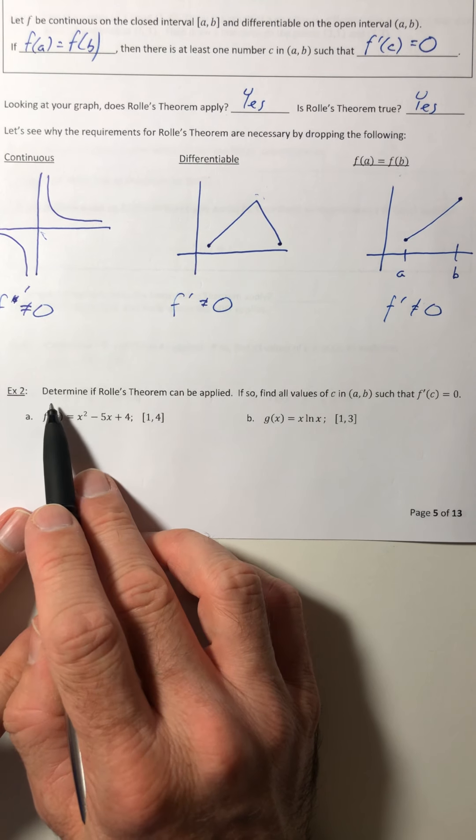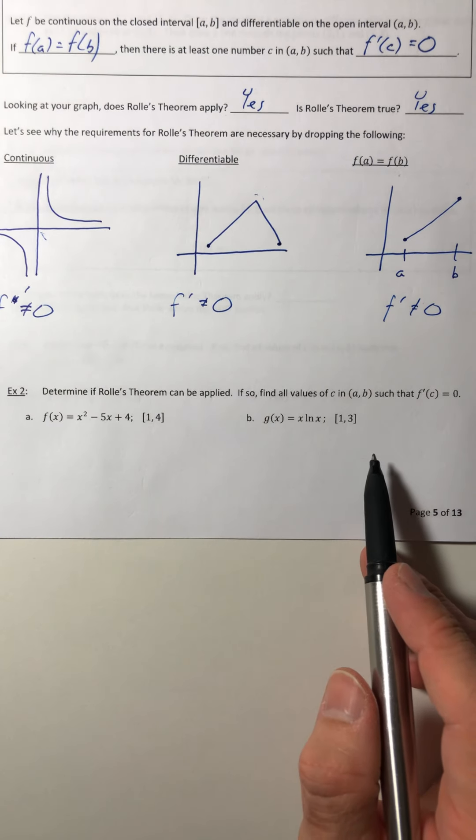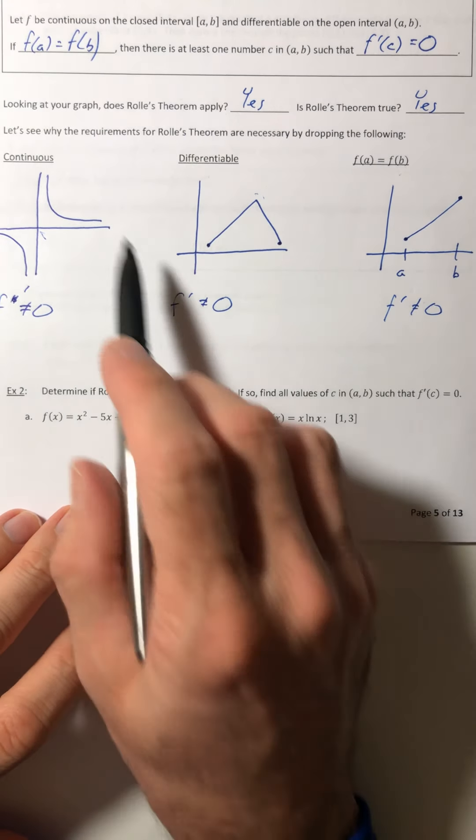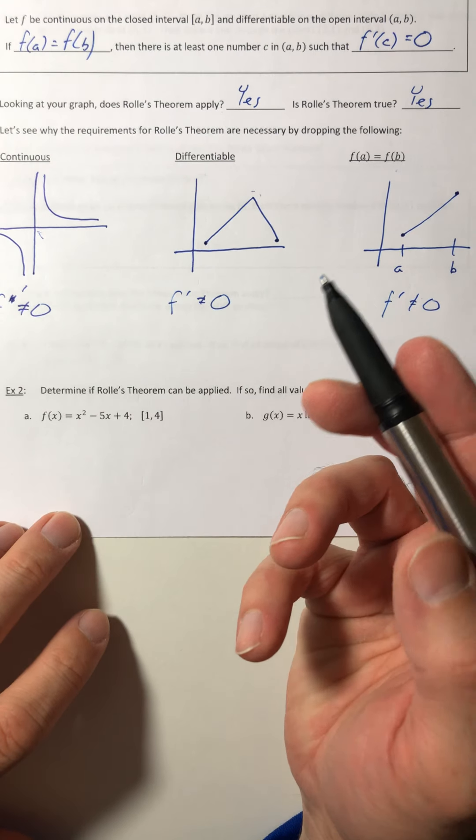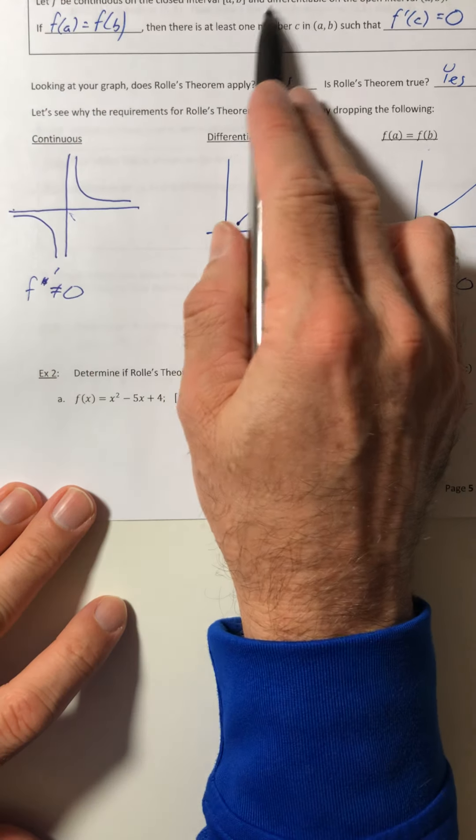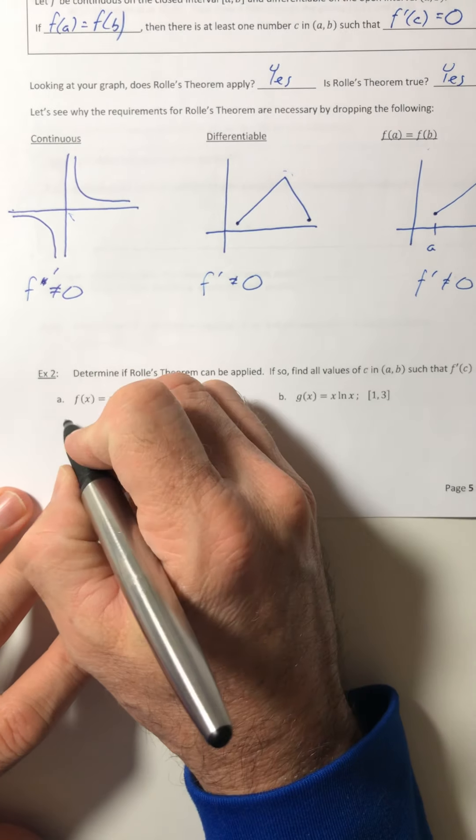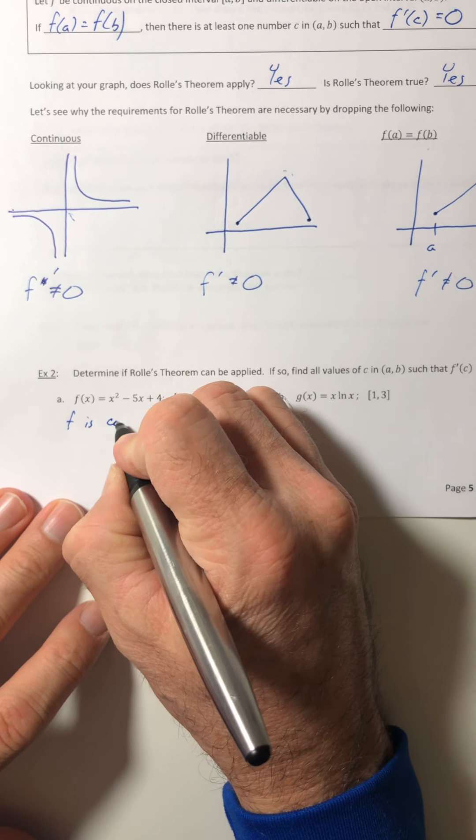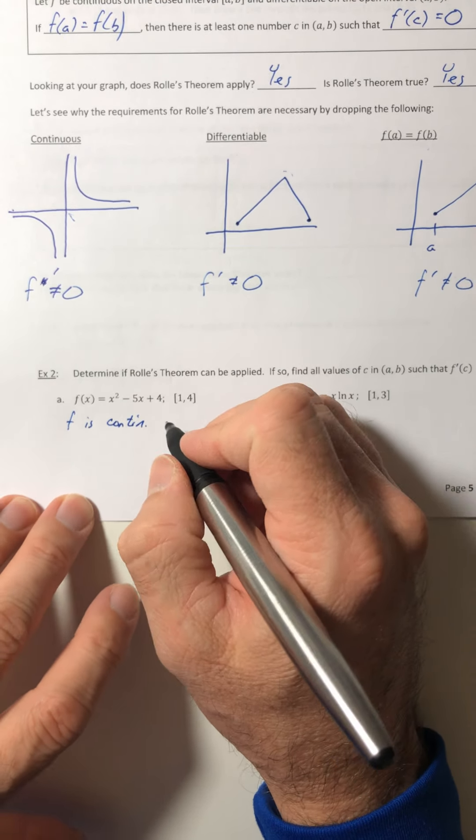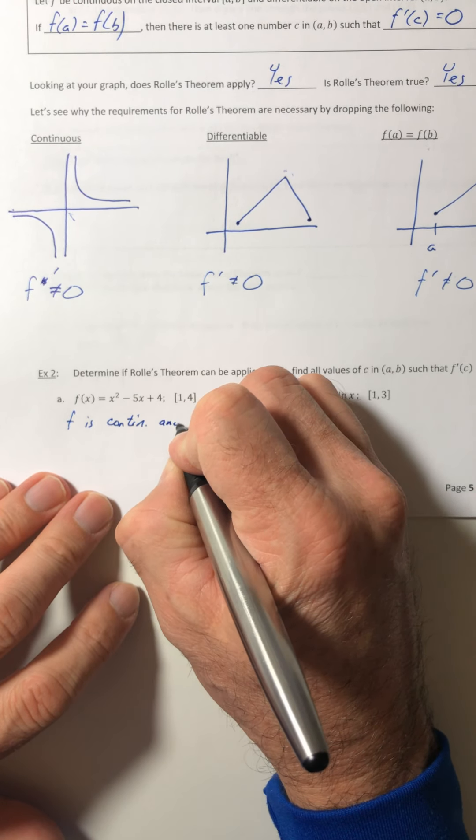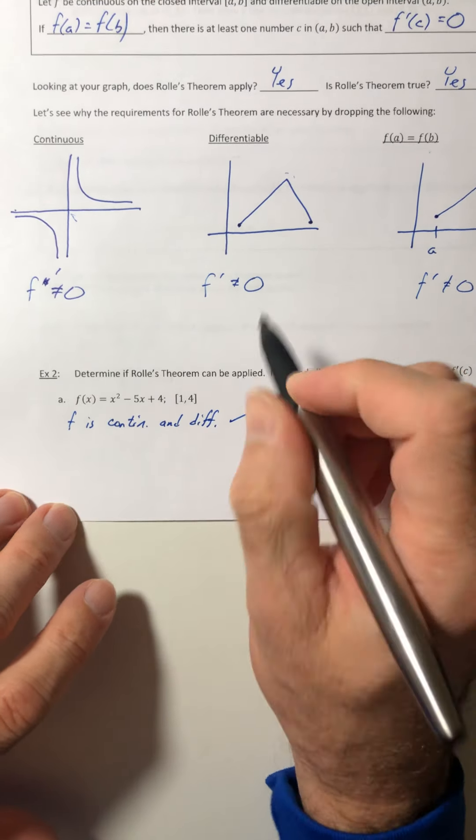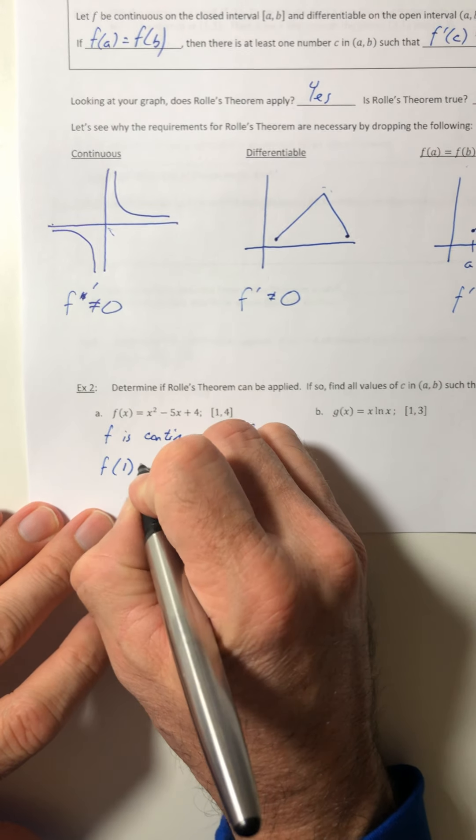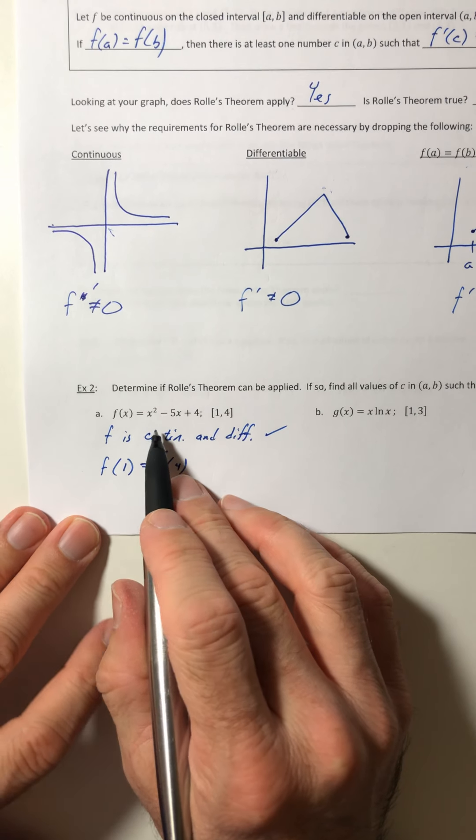Okay, so example two. Let's determine if the theorem can be applied, and if it does, find all values of C where the derivative is zero. So if you're going to determine if the theorem applies or not, you have to run through these three conditions and show that they hold. So the first two, is it continuous and differentiable? Well, in this case, for f, f is a polynomial, and all polynomials are continuous and differentiable. Okay, so that part's done. So now you've got to verify that f(a) equals f(b).